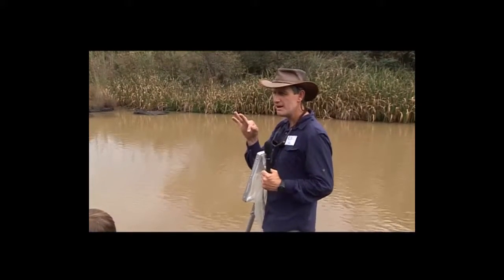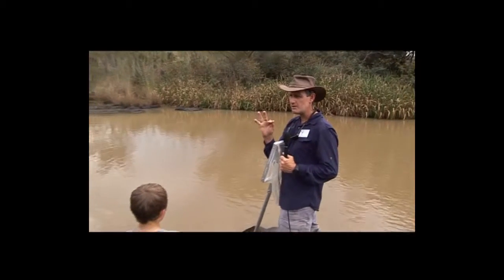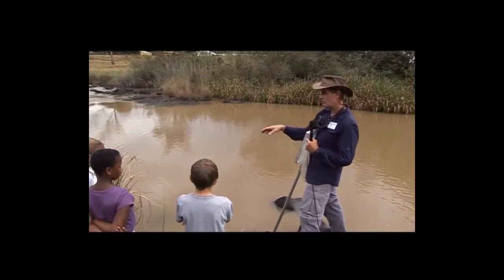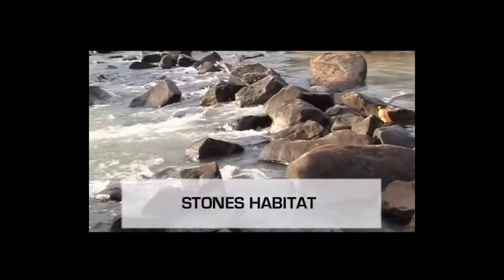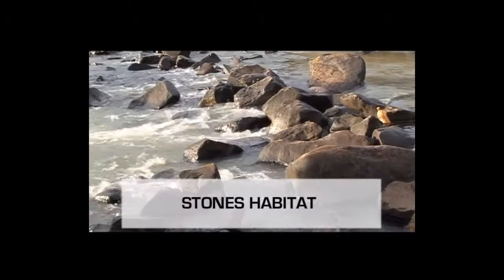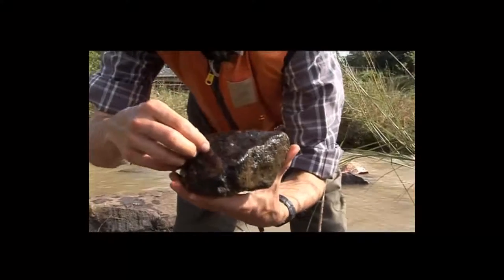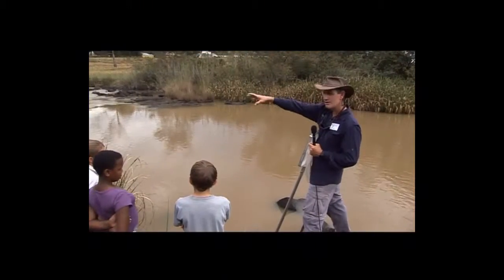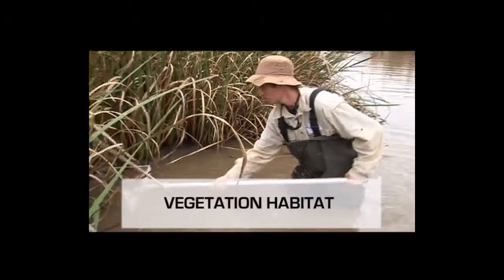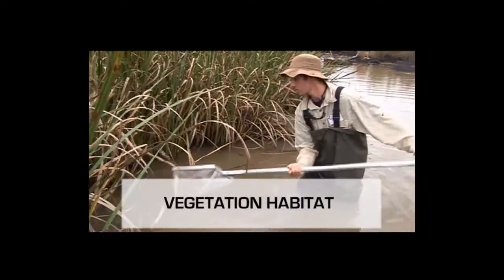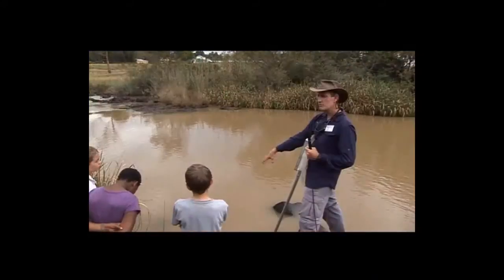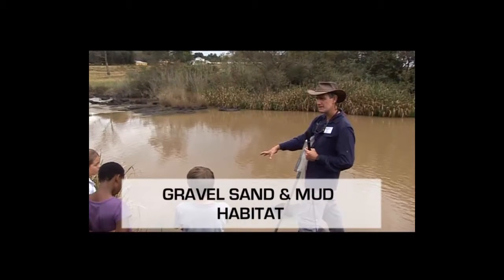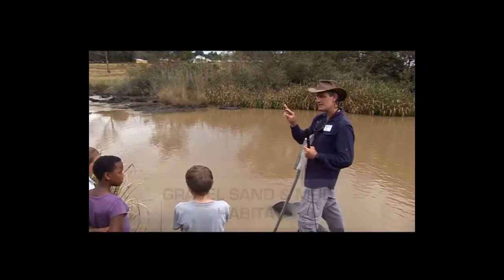So we've got three main what we call biotopes, or biological habitats, that we go to sample. First is the stones habitat — the rocks, riffles, and cobbles, typically a stone you can turn over with your hand. Then there's the vegetation habitat on the sides of the river. And finally what we call the gravel or sediment samples — gravel, sand, and mud. So those are the three main habitats we're going to look at.